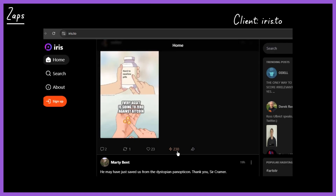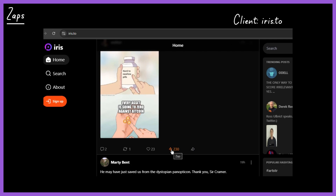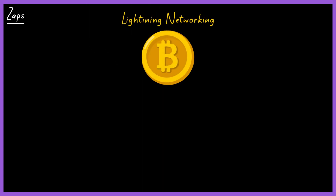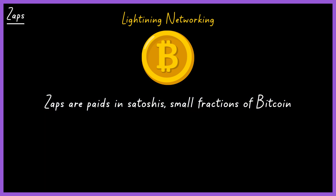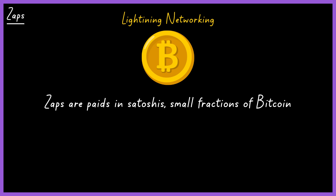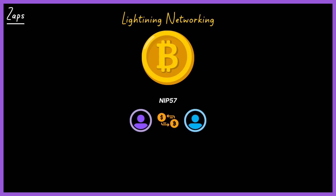You can monetize your content on the Nostr network thanks to Zaps. The simplest way to understand Zaps is to think of them as digital tips. These tips are transmitted via the Bitcoin Lightning Network with extremely low transaction fees, and are paid in Satoshis — small fractions of Bitcoin. Since the inception of the Nostr protocol, it was common to see Lightning invoices in notes. With the implementation of NIP-57, Zaps have become the primary way to transfer value and interact on Nostr, allowing users to support each other directly.